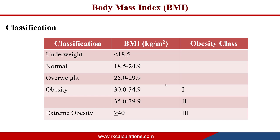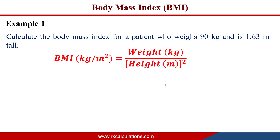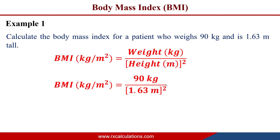Example 1: Calculate the body mass index for a patient who weighs 90 kilograms and is 1.63 meters tall. The weight is in kilograms and the height is in meters, so we use the metric BMI equation: BMI = weight in kg ÷ (height in m)². Substituting the values, BMI = 90 kg ÷ (1.63 m)².